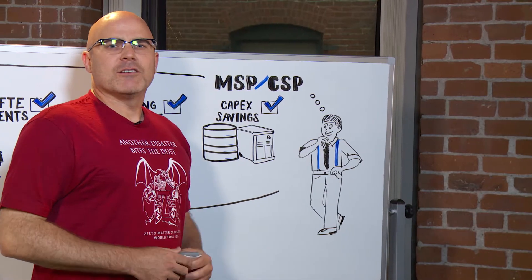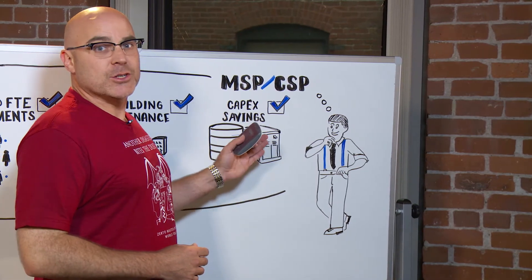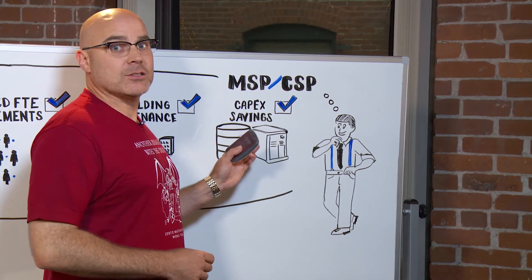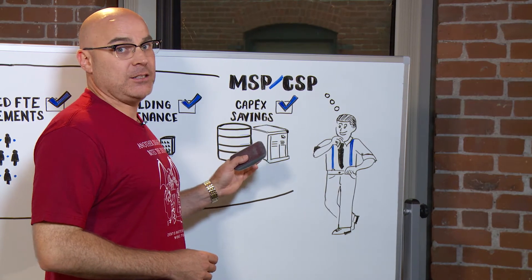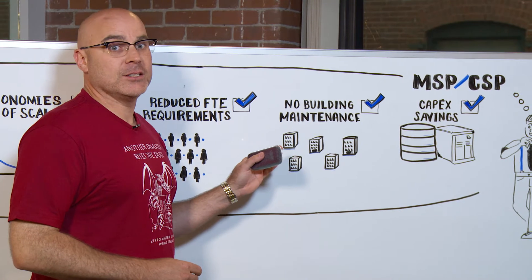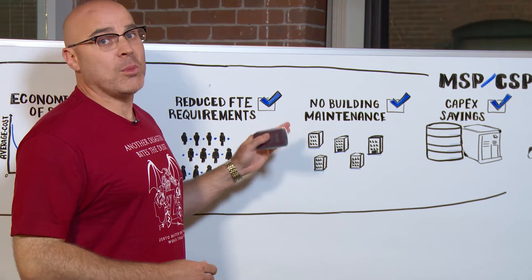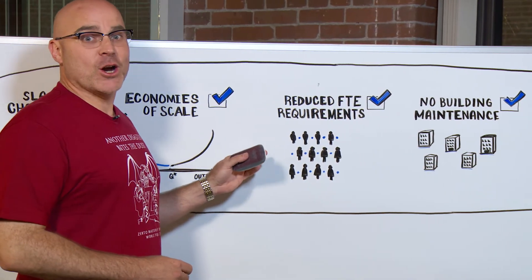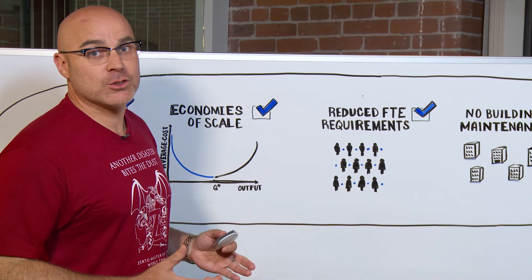Some of the value and benefits you'll receive working with an MSP or CSP are CapEx savings—no hardware to buy or maintain, and no, you do not need two storage arrays, no building maintenance, no leases, no power and cooling—reduced FTE requirements, and making better use of your current resources.